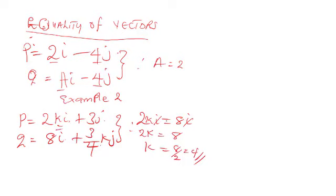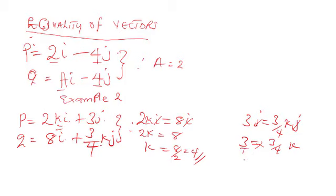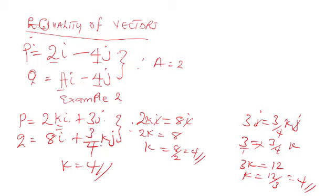Now let's verify using the j-component. We have 3 equal to (3/4)k. Cross-multiplying gives 3k equal to 12, so k equals 12 over 3, which is equal to 4. In both components the value of k is 4. If you substitute k as 4 into both vectors, it makes these two vectors equal.